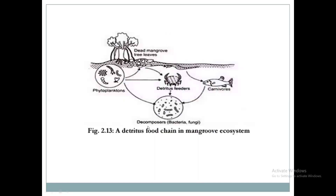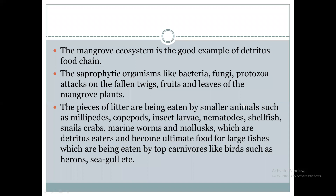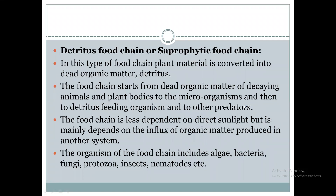This is shown in the diagram. In this image of the detritus food chain, the dead leaves of plants — dead mangrove tree leaves after decaying — form decayed organic matter. That decayed organic matter will be consumed by phytoplankton, then consumed by macro-organisms, then by detritus-feeding organisms, and finally to other predators.